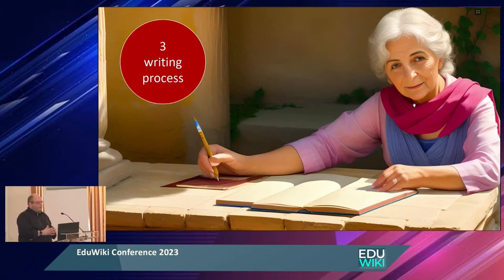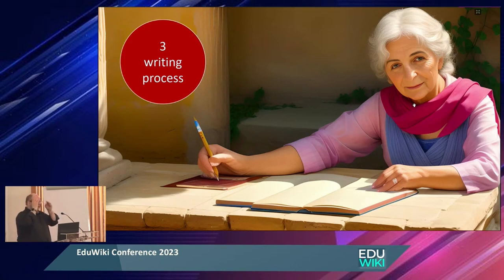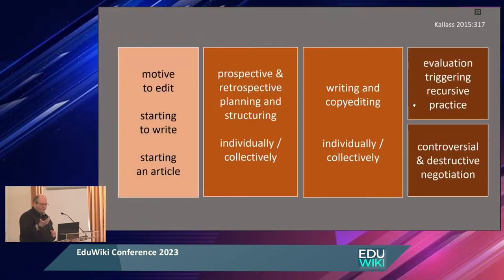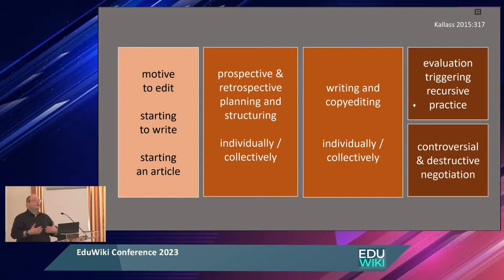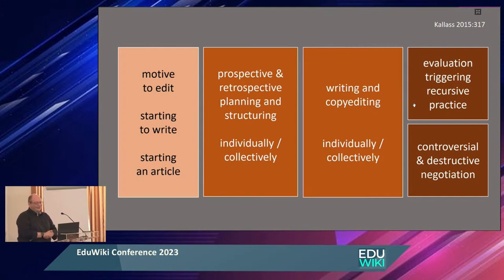Writing process. I'm going to talk partially about a PhD thesis of Kerstin Kallas, who analyzed German Wikipedia and the writing processes. She analyzes something that many Wikipedians do in their head without consciously distinguishing between different processes and phases of writing — we do it intuitively. On the left it's about why you would start an article, what is your motive, the planning and structuring, the actual writing, but also copy editing. You can do it individually in Microsoft Word and then put it into the wiki, or maybe discuss with others on the talk page how to structure the article.